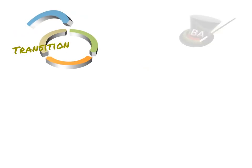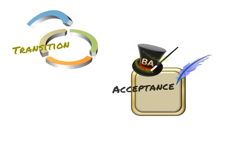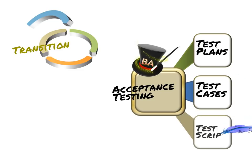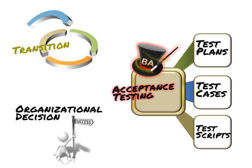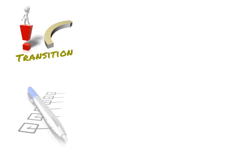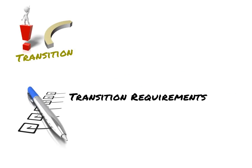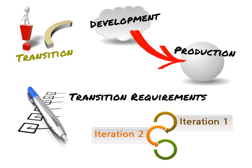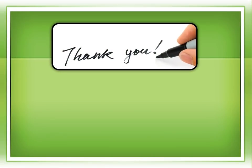In the transition phase, the BA might be tasked with acceptance testing tasks such as creating test plans, test cases, and test scripts. Whether or not the BA is involved in testing is an organizational decision. A fundamental business analysis task in this phase is to define transition requirements and help the development team to transition the system from development to production. After completion of the transition phase, the next iteration for this project starts, and all business analysis activities are repeated.